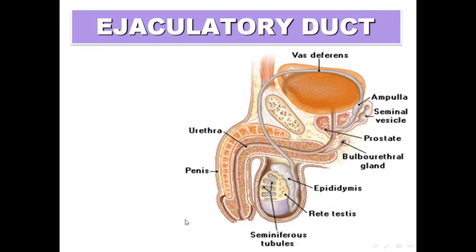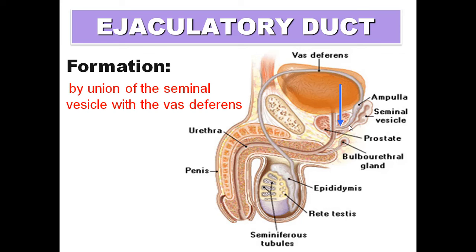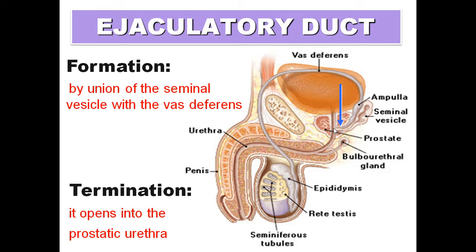The ejaculatory duct is a very short duct. It is formed by the fusion of the vas deferens and the seminal vesicle duct, and it opens into the prostatic part of the urethra.